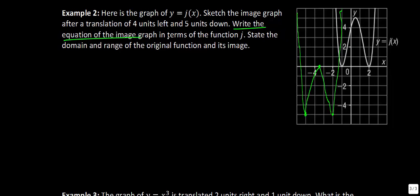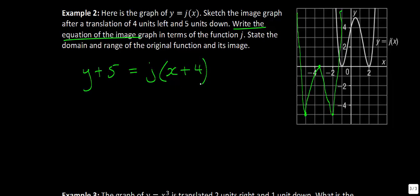Now let's write the equation of this graph. The original was y equals j of x. Because we've moved 5 units downward, doing the opposite, we write y plus 5. And because we've gone 4 units left — in the negative direction — doing the opposite again, we write x plus 4. So the equation of the image graph is y plus 5 equals j of x plus 4.